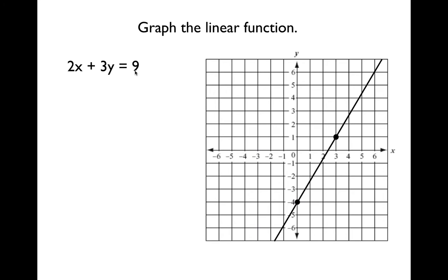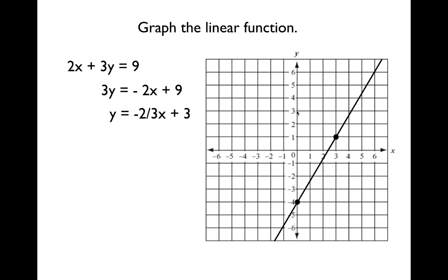Alright, let's see how you did. y times 3 plus 2x — to undo this, we'd subtract 2x and then divide by 3. And when you do that, what you get is y equals negative 2 thirds x plus 3. So we can plot our y-intercept — our y-intercept is 3, so we can plot that point.